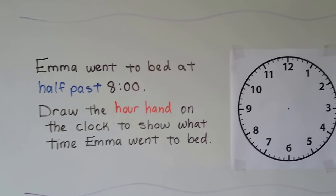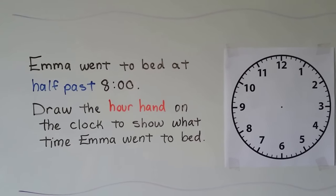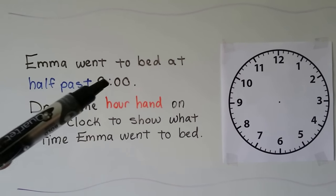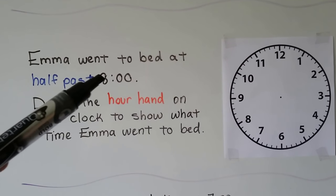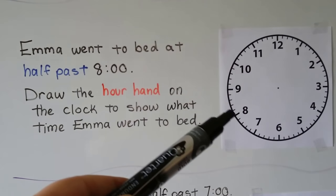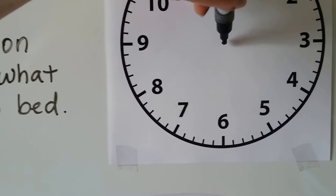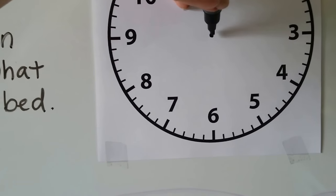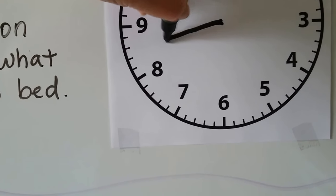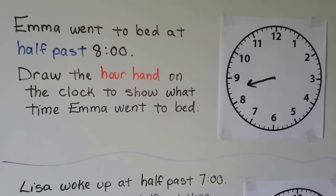Emma went to bed at half past eight o'clock. Draw the hour hand on the clock to show what time Emma went to bed. It's half past eight o'clock, so it's going to be in between the eight o'clock and the nine o'clock. We draw the hour hand — remember it's shorter — starting here, pointing in between the eight and the nine to show half past eight o'clock.